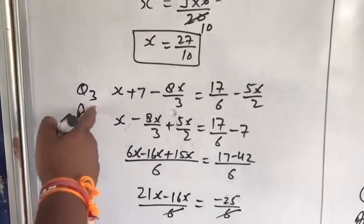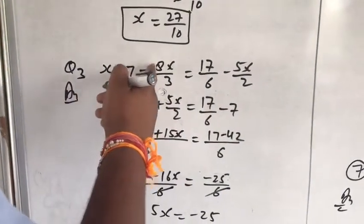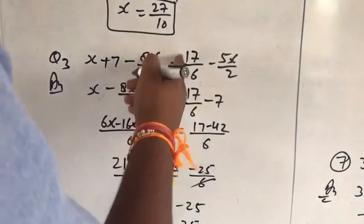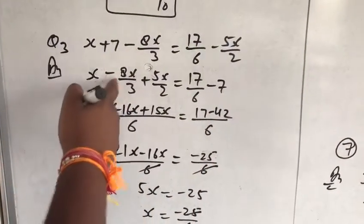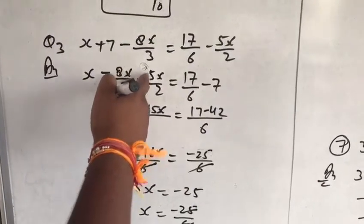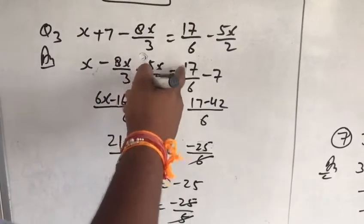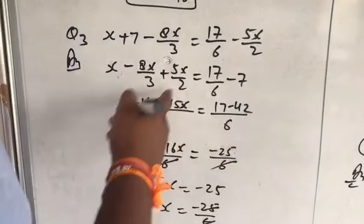Now question number 3 is x plus 7 minus 8x upon 3 equal to 17 upon 6 minus 5x upon 2. The answer is x minus 8x upon 3 plus 5x upon 2 equal to 17 upon 6 minus 7. Now taking LCM.